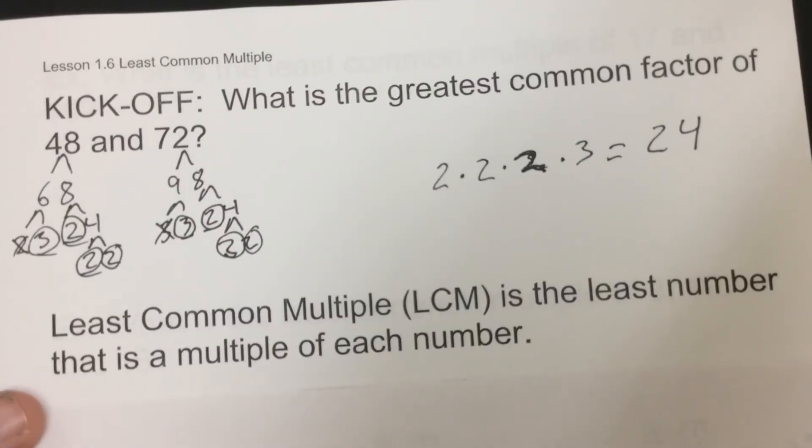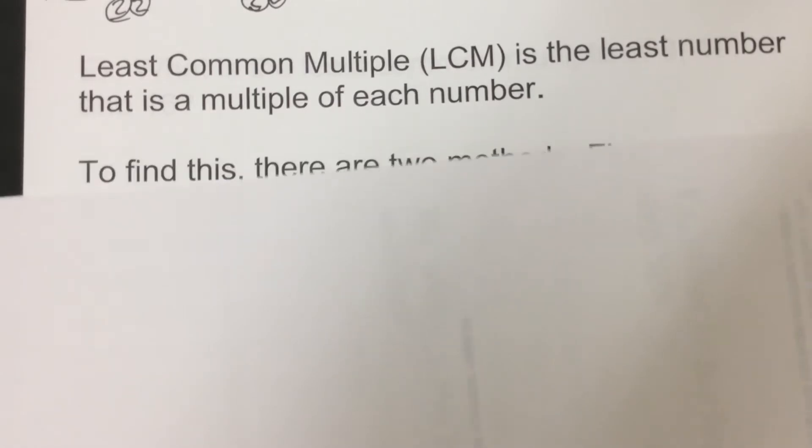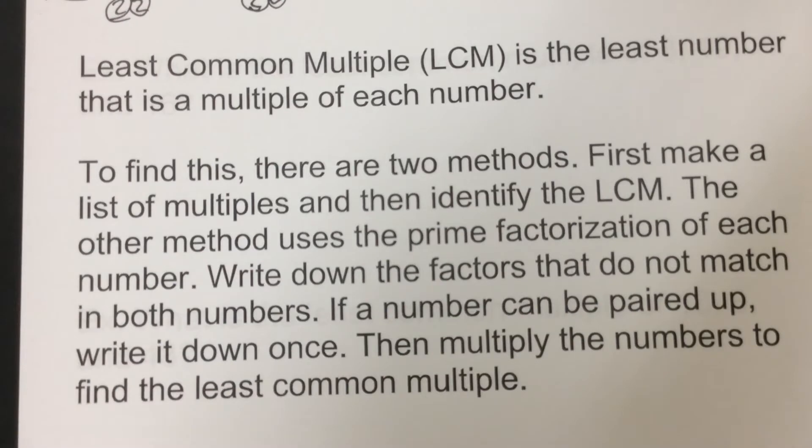Now building on that, we're going to switch to least common multiple, which are kind of related here. So this one's going to be the smallest number that is a multiple of both. So what numbers can divide into it? Think of it that way. So two methods. One way we're going to list out the multiples.